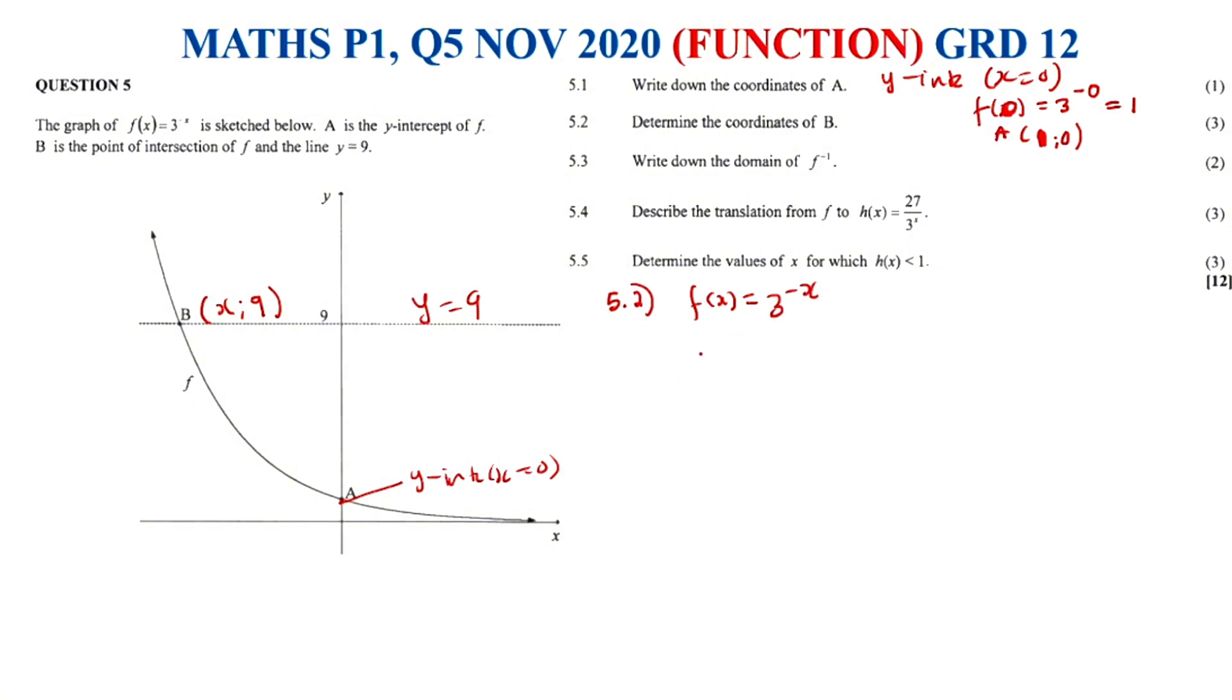Therefore, we are saying what is y? Y is 9, therefore 9 equals 3 to the power of negative x. We need to find x. So 3 to the power of 2 is also equals to 9. 3 to the power of 2 equals 3 to the power of negative x. And according to the exponent rule, if the bases are the same, therefore the exponents should also be equal. 2 equals negative x.